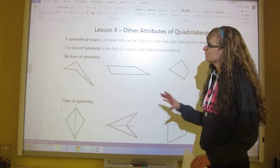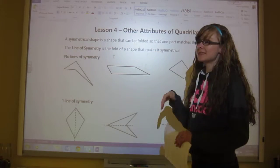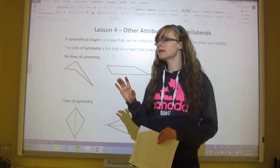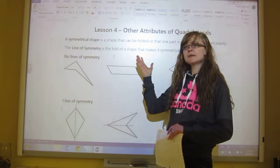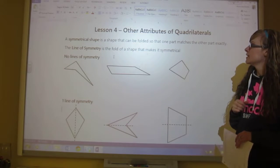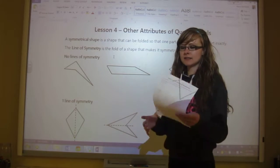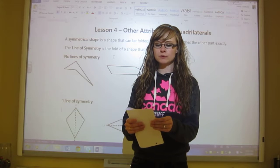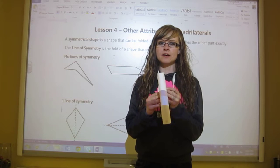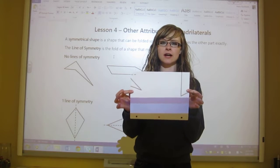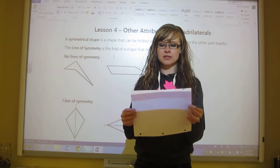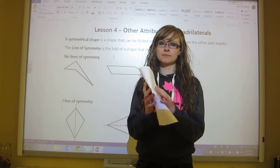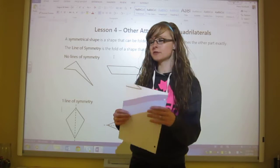Okay, now we're going to look at the symmetry of these shapes. Remember that a symmetrical shape is a shape that can be folded so that one part matches the other part exactly. So my paper is symmetrical because I can fold it like this and I'll have two exact sides that mirror each other, and I could also go this way and be symmetrical that way.